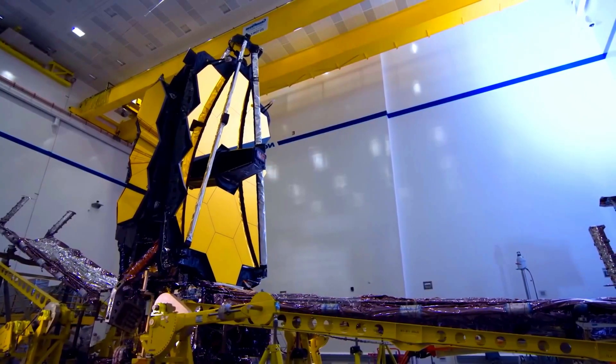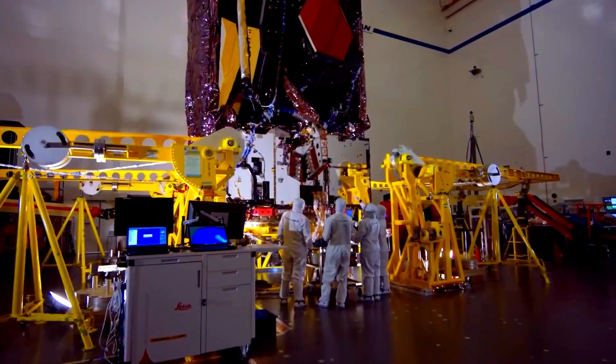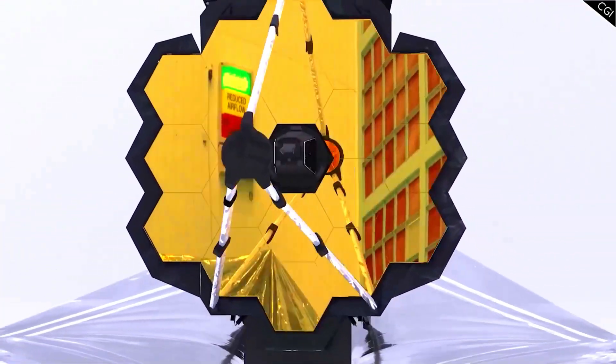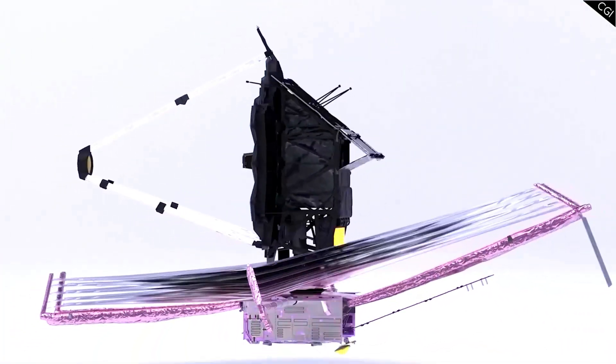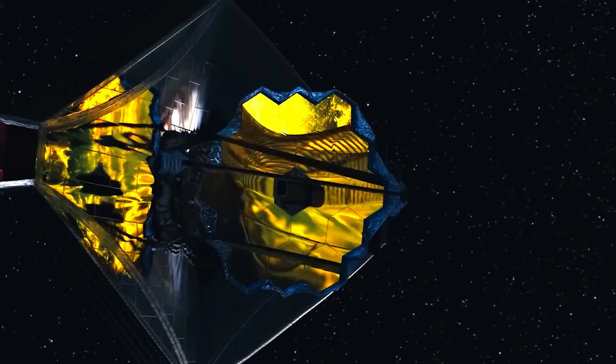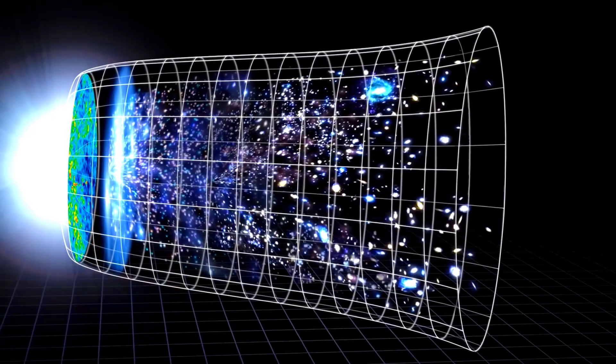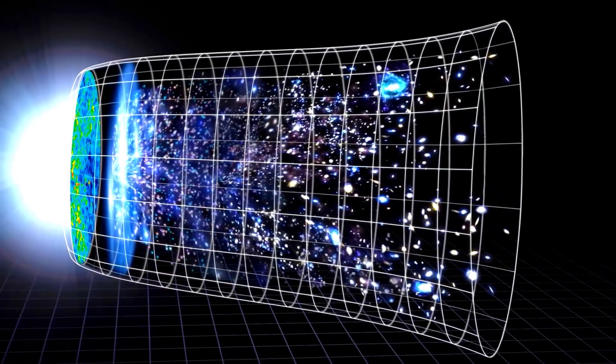With a mirror over 21 feet wide and infrared vision that cuts through clouds of cosmic dust, JWST doesn't just observe the universe, it rewrites it. Every pixel it captures, every faint glow it records, tells a story from billions of years ago, when stars were first born and galaxies were young and chaotic.